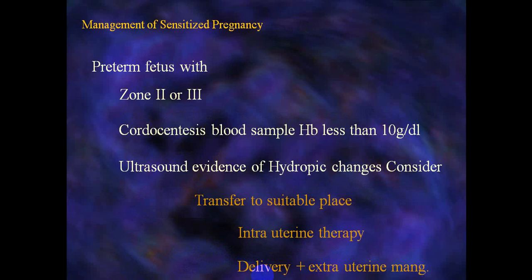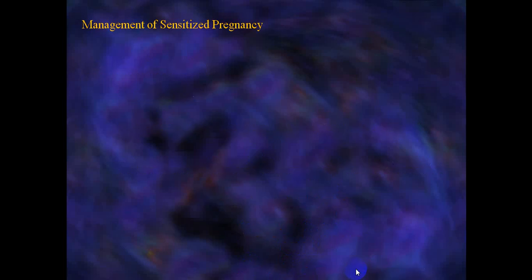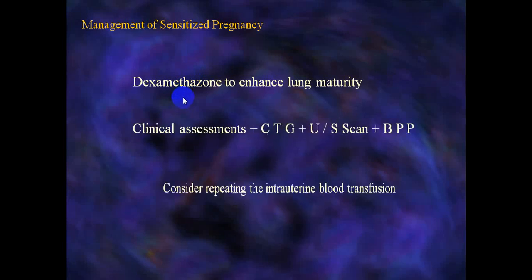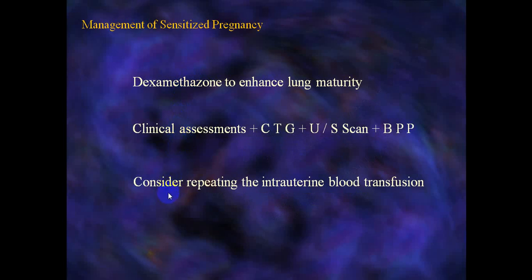Cordocentesis and blood sampling: if hemoglobin is less than 10 g/dL, the fetus will develop anemia. With ultrasound evidence of hydropic changes, consider transfer to a suitable facility for intrauterine therapy, followed by delivery and extrauterine management including exchange blood transfusion to prevent kernicterus. Other medications used include intrauterine dexamethasone to enhance lung maturity. Clinical assessment, cardiotocography, and ultrasound are performed, and repeated intrauterine blood transfusion is considered before delivery.